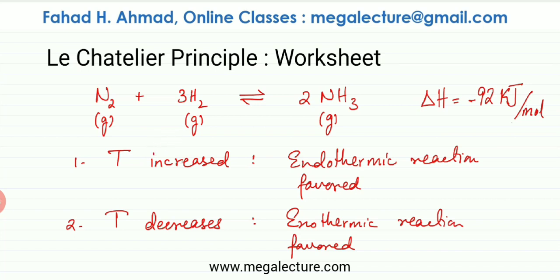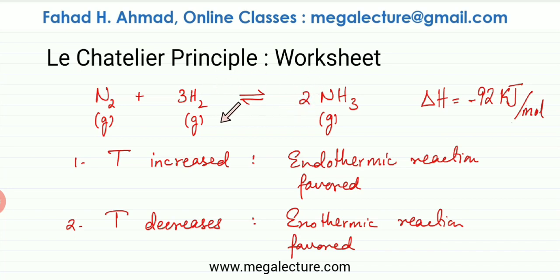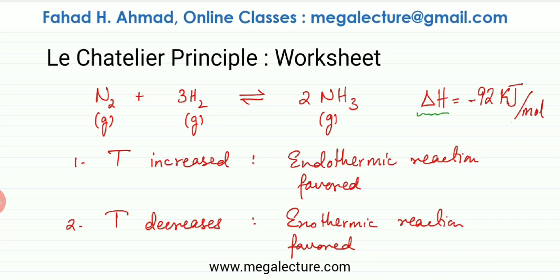The first rule for Le Chatelier's principle is if you alter temperature. If temperature is increased, then the endothermic reaction is going to be favored. Vice versa, if temperature decreases, an exothermic reaction is going to be favored. To figure out which reaction — forward or backward — is endo or exo, you look at delta H. In this case, delta H is given as minus 92.